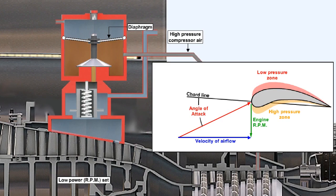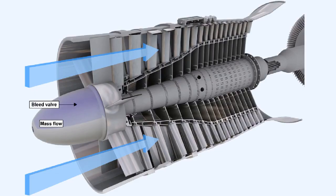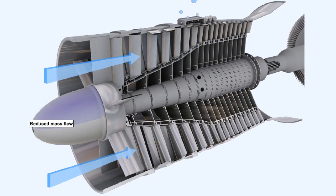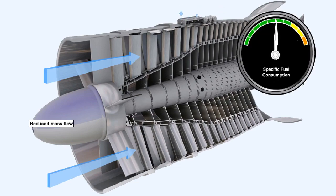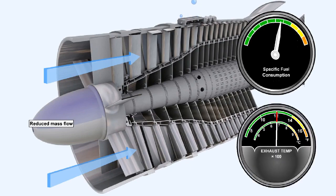However, there are disadvantages to the use of the system. Opening any compressor bleed — whether used as a stall preventative measure or to supply air for aircraft services — decreases the mass airflow through the engine. A decrease in mass airflow will cause a drop in thrust for a given throttle position, which raises the engine's specific fuel consumption or SFC. A decrease in mass airflow also raises the engine's exhaust gas temperature, because the amount of cooling air available in the combustion chambers will have decreased.